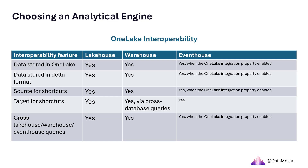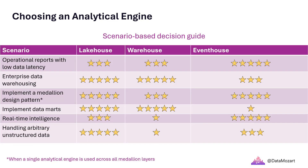Based on all of the aforementioned criteria and typical analytical requirements, I've identified a few common scenarios you might face when deciding which Fabric component to pick for a particular use case. The table you see illustrates the level of suitability of each analytical engine for the scenario and the scope. A 5-star rating means the particular engine is a good fit. A 3-star rating means the scenario may be accomplished but with some limitations or considerations. Finally, a 1-star rating means I don't recommend using that engine for that specific use case.